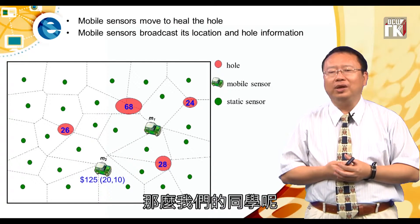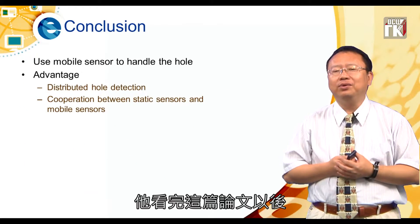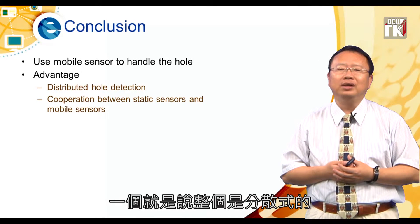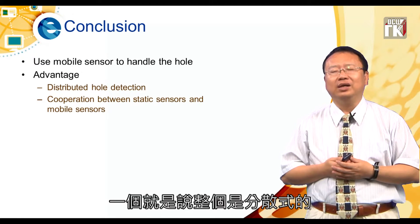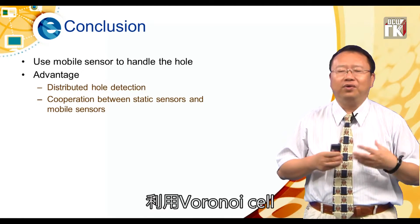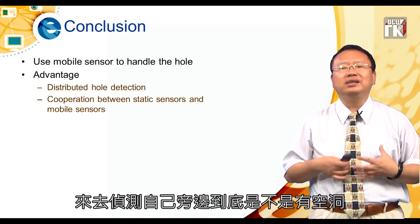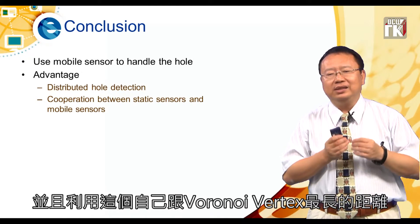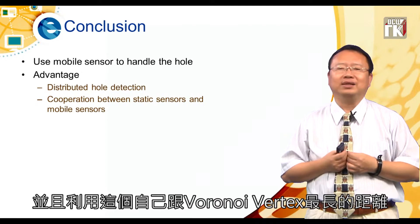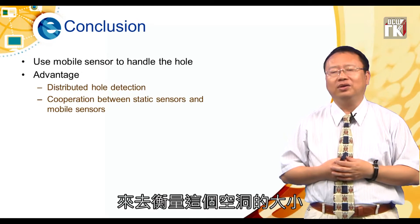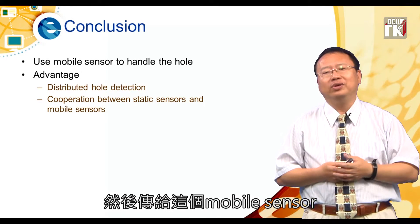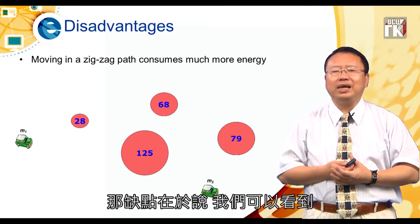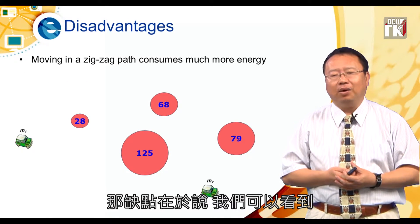我们同学看完这篇论文以后，觉得它有好处：整个是分散式的，全分散式，利用Voronoi Cell来侦测自己旁边是否有空洞，并且利用自己跟Voronoi Vertex的最长距离来衡量空洞大小，然后传给Mobile Sensor。